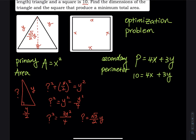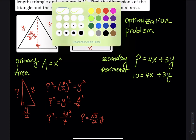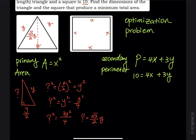Now we can complete the triangle area: base times height divided by 2, which is (1/2) · y · (√3/2 · y). That gives us the primary equation as a function of both x and y.